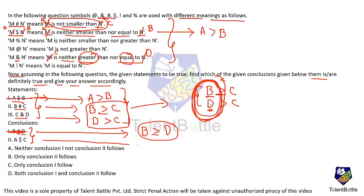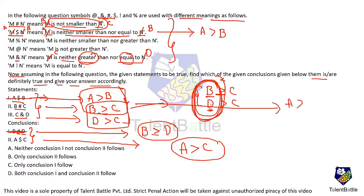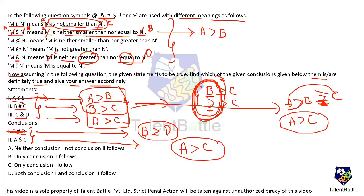Let's look at conclusion two: a dollar c, meaning a is neither smaller than nor equal to c — so a is definitely greater than c. Using statements one and two: a is greater than b, and b is greater than or equal to c. If b is greater than c, then a is also greater than c. If b is equal to c, then since a is greater than b, a is also greater than c. So in any case, a will definitely be greater than c. Conclusion two is correct, and the answer is option B — only conclusion two follows.